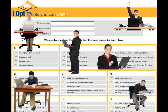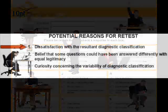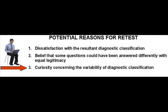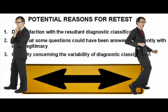The reasons for retesting established the stress test element of the experimental design. These reasons included things like: they might not have liked their initial result, they might believe they could have answered some things differently, or they might just have been curious about the variability of the diagnostic classification. These are all motives for changing their initial diagnostic results. Most studies try to maintain constant conditions between tests and retests — in other words, they try to minimize any negative bias.